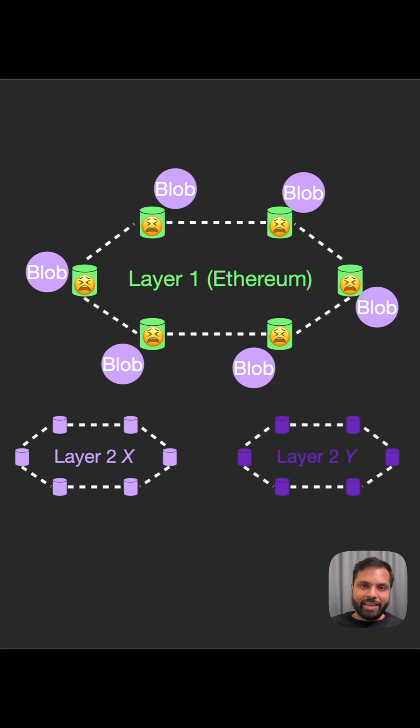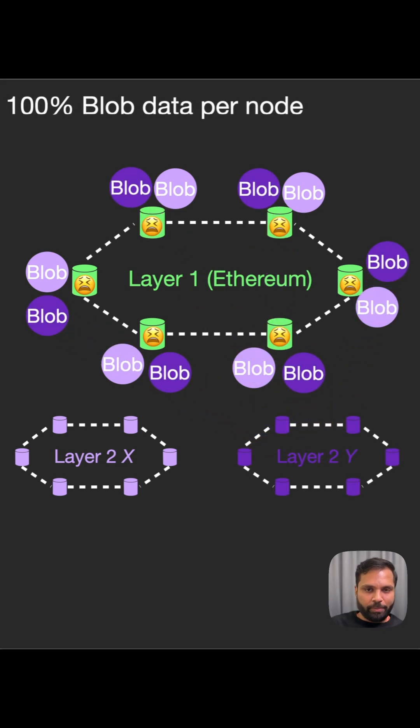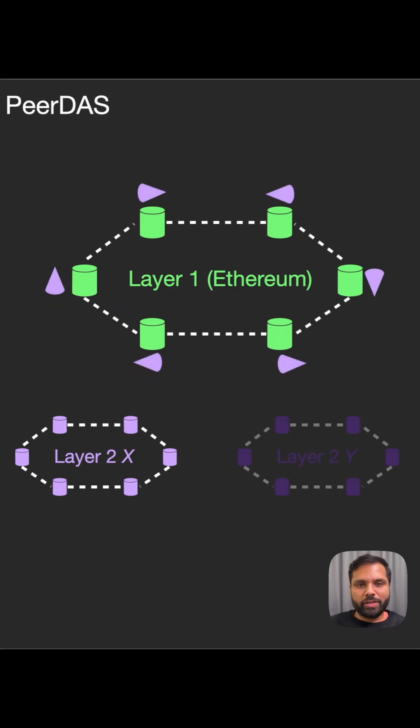Traditionally, every node needed to store blob rollup data, which was heavy and costly. With PeerDAS, each node only stores a small random chunk of data.